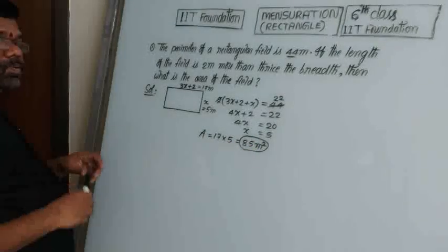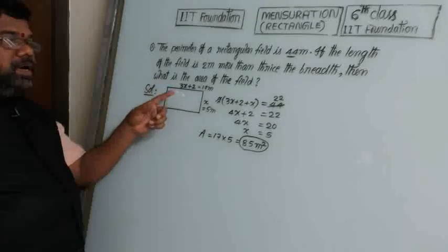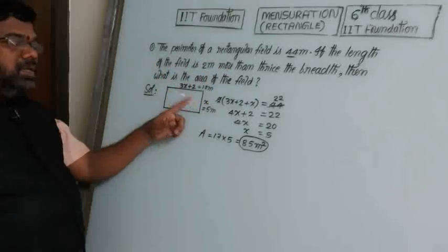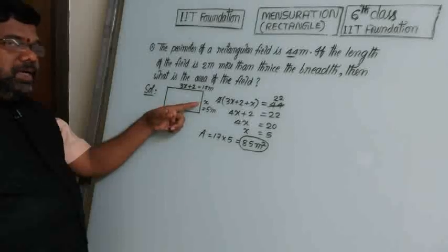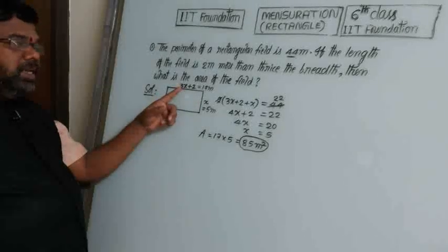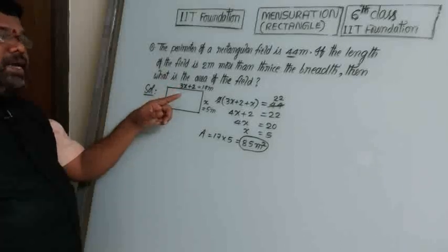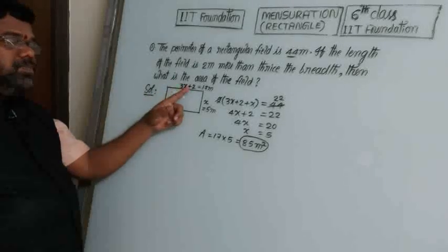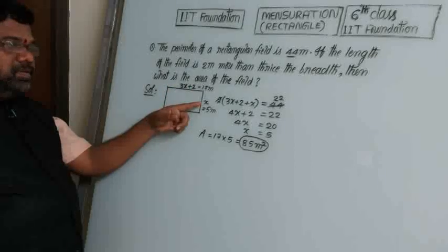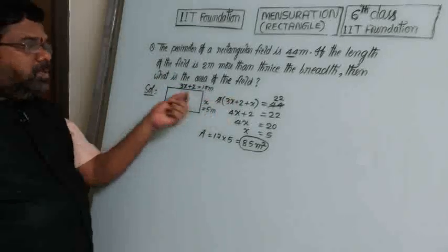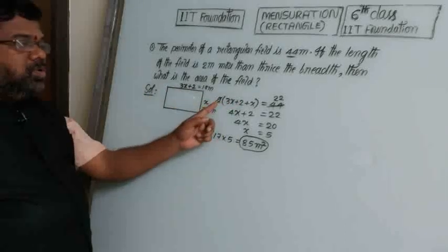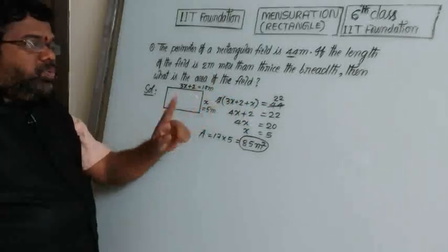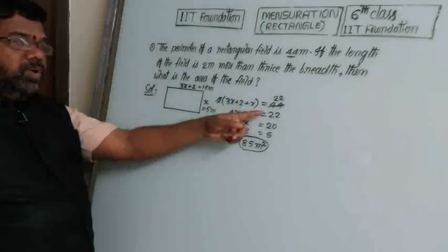To summarize: we have the perimeter of a rectangle. The condition is that length is 2 meters more than 3 times the breadth. Let breadth be x, so length is 3x plus 2. Perimeter: 2 into (3x plus 2 plus x) equals 44. Cancelling 2 gives 4x plus 2 equals 22.